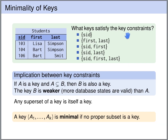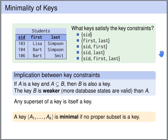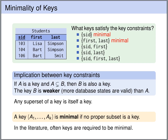Which of our keys are minimal? SID+first is not minimal — we can drop first and still have a key. SID+last is not minimal — we can drop last. SID+first+last is not minimal — we can drop SID and still have the key first+last. The only minimal keys are SID (we cannot drop anything) and first+last (dropping either attribute destroys the key). In the literature, minimality is often included as part of the definition of a key.